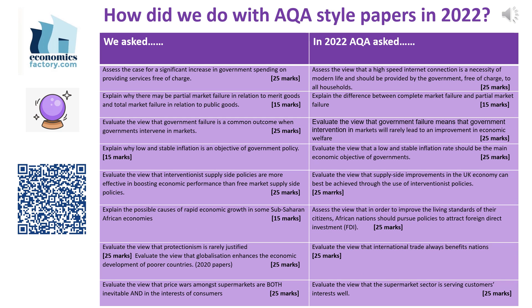Going back to 2022, we were just as accurate that year as well. For any questions we asked on our papers in 2022 and 2023 that didn't actually come up, those topics are in some senses even more due for testing now. So if you buy the 2024 papers and like them, why not get the 2022 and 2023 papers as well — you'll find more material there that will really help you.